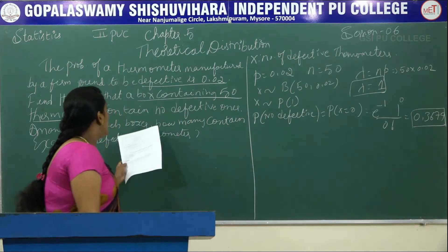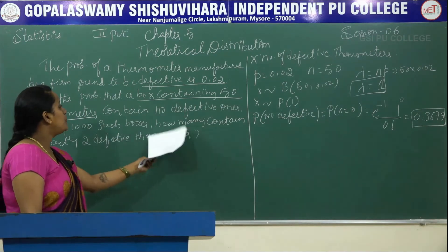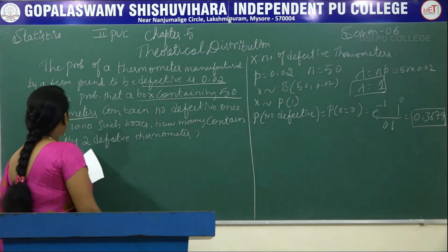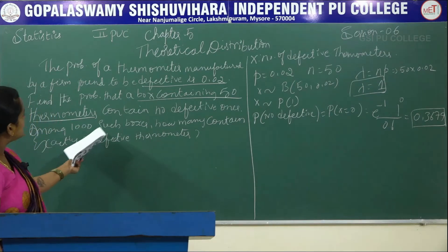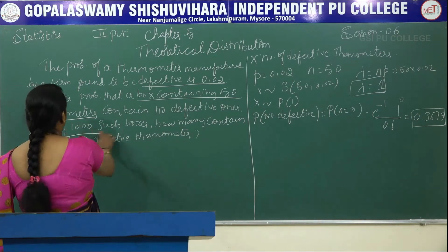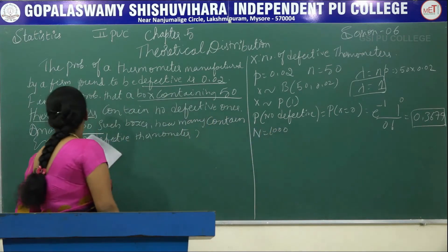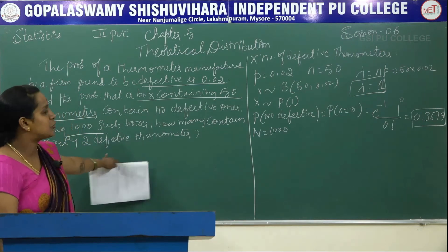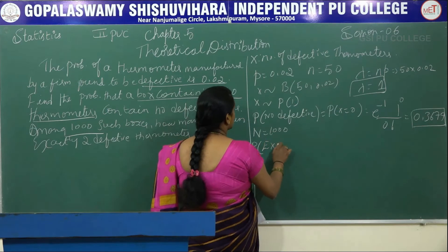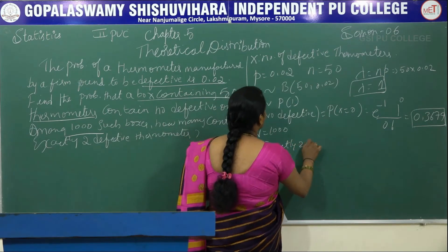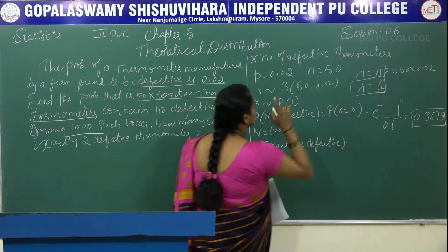Next: among 1000 such boxes, how many contain exactly two defective thermometers? Among 1000 such boxes, this 1000 is our capital N. We want to find the probability of exactly two defectives, that is P(X=2). Here I did not write the PMF — I will write the PMF now.